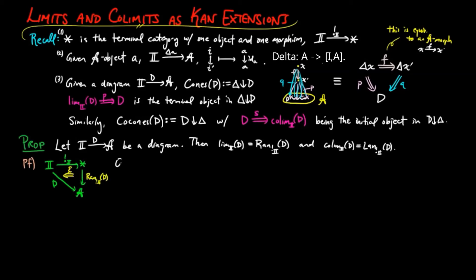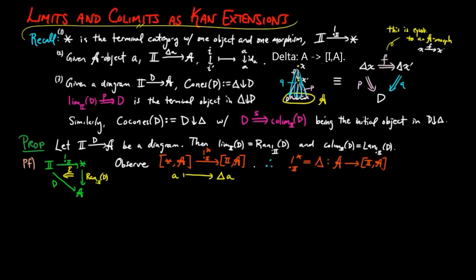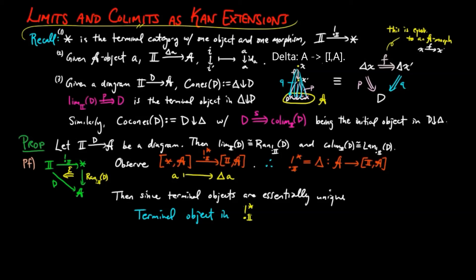To prove the limit case, observe that the pre-composition functor of shriek_I is equal to the I-diagonal functor delta, from the category a to the functor category I to a. Then since terminal objects are essentially unique, we see that the terminal object in shriek_I^* over d, which is equal to delta over d, by definition is the right Kan extension of d along shriek_I, which then must also be the limit cone of d.